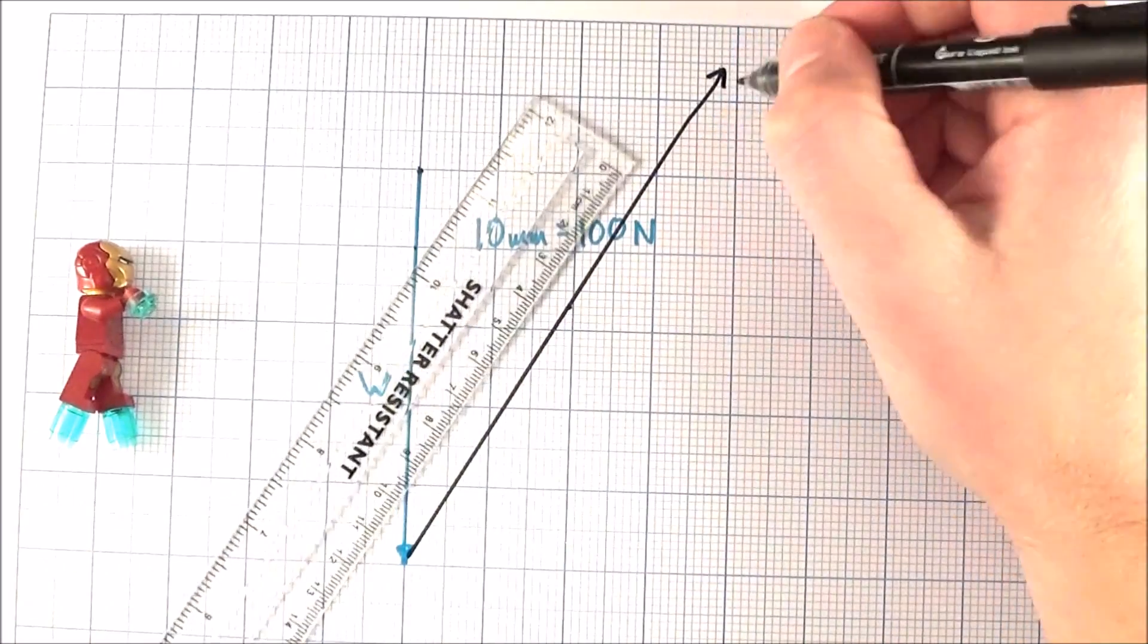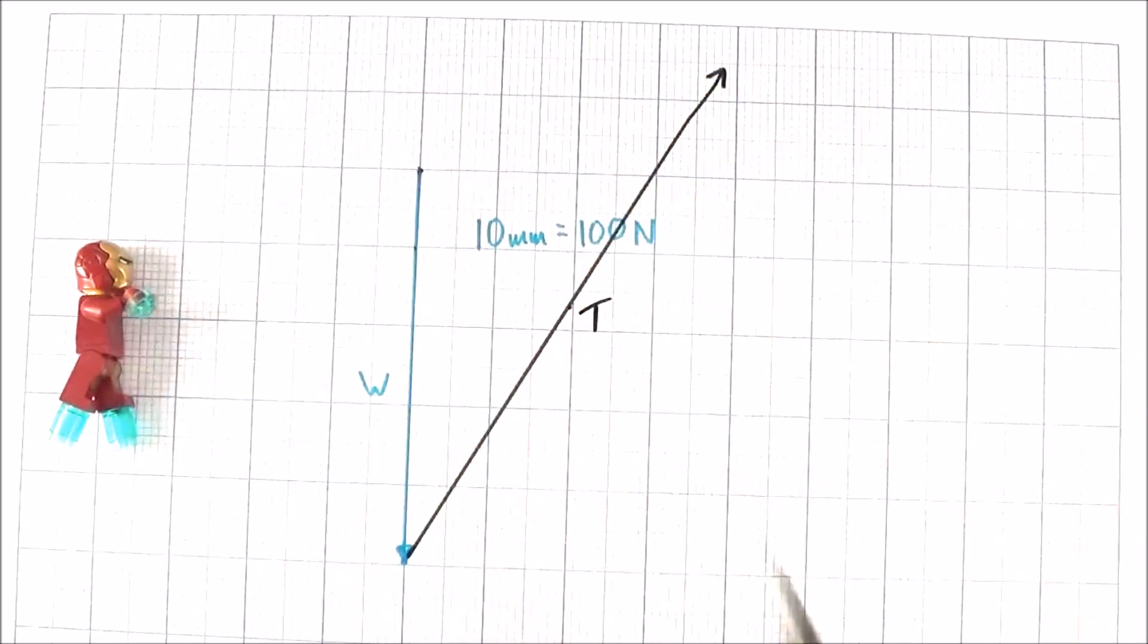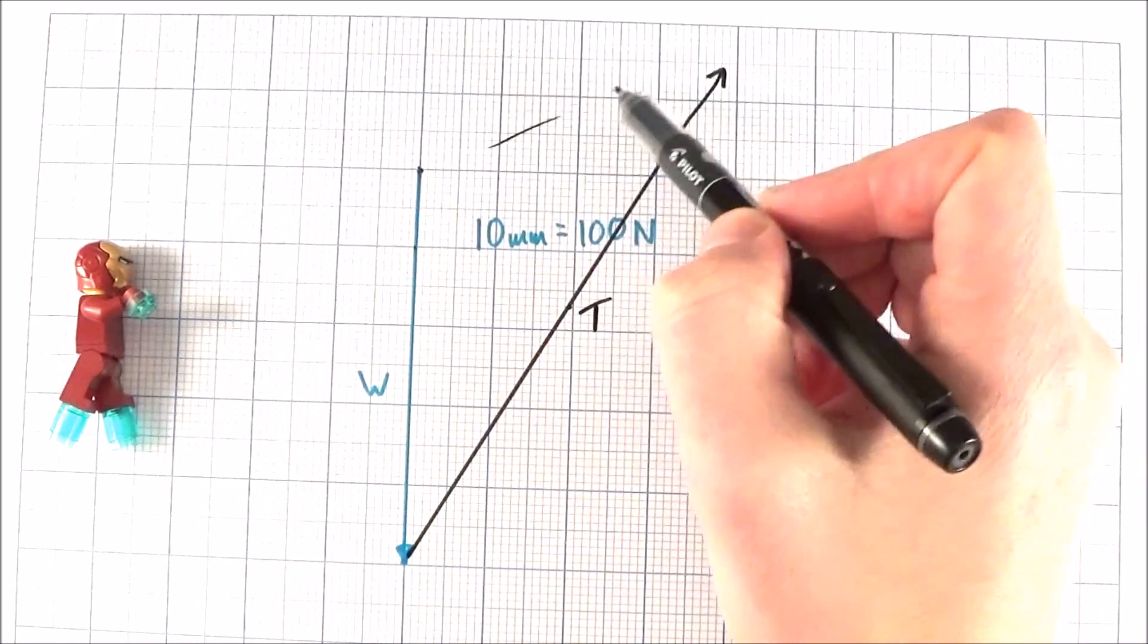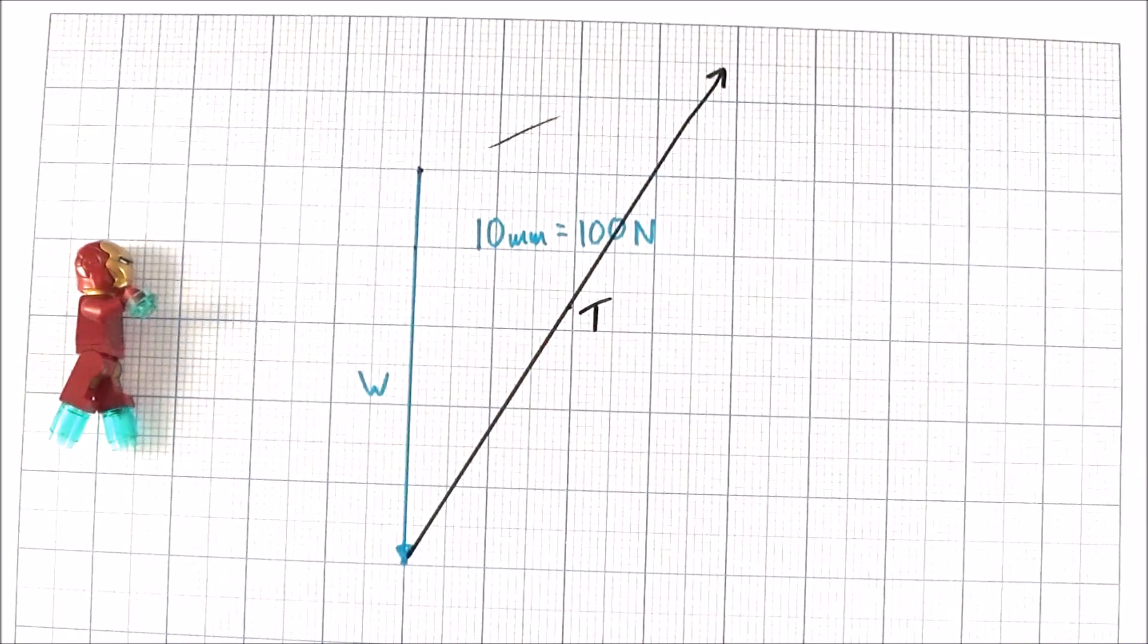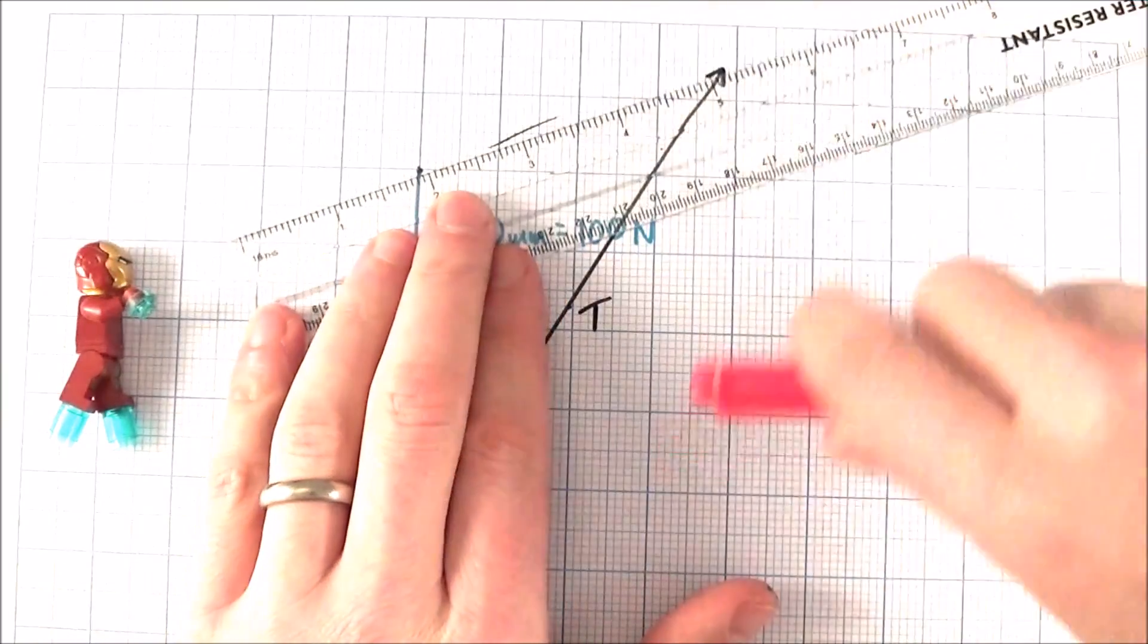So what we have here is the weight acting down and maybe the thrust provided by Iron Man. Now the result of these two vectors is effectively the single vector that would have the same effect as these two. And I'm going to draw that in from here up to here.